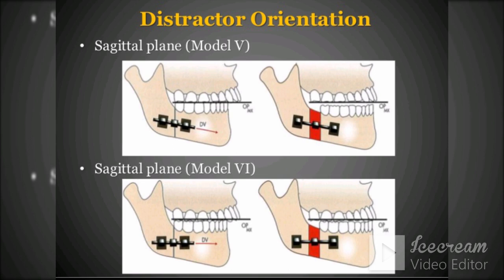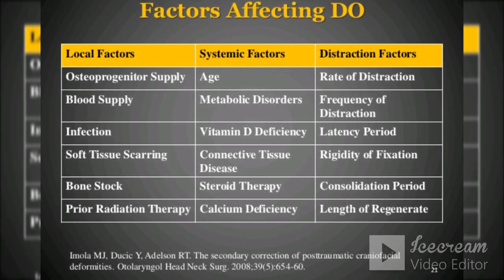In young children, the latency period should be shorter. The rate of distraction should be 0.5 to 2 mm per day. This rate is influenced by the surgical site and the age of the patient. In neonates, the distraction rate should be faster to prevent early ossification. Application of a continuous force is ideal; however, activation of the distraction device twice or three times a day is practical. Following distraction, a period of stabilization for consolidation of the bone regenerate is essential. The consolidation period depends on the magnitude of the distraction, the type of deformity, and the age of the patient. In adults, the consolidation period should be at least 3 months, while in children a shorter period may be indicated. Once consolidation has been confirmed radiographically, the distraction device can be removed.